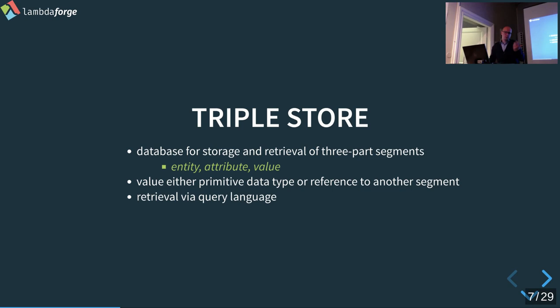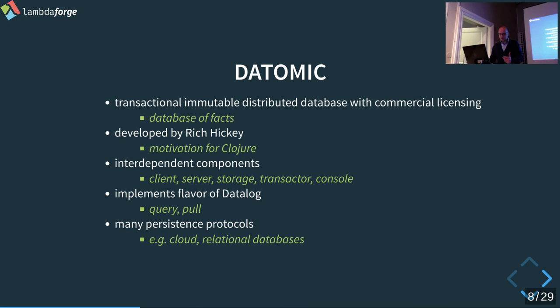You retrieve the data with a query language. Datomic is, in the Clojure world, one of the examples of a triple store. It's a transactional immutable distributed database but with commercial licensing. It stores the database as facts, developed by Rich Hickey — he developed Clojure in order to build a database that wasn't there yet. It has interdependent components: one transactor responsible only for transacting data, a separate query engine, separate storage, and separate console and client. It implements a flavor of Datalog with query and pull syntax, and supports many persistent storage backends like cloud layers or relational databases.